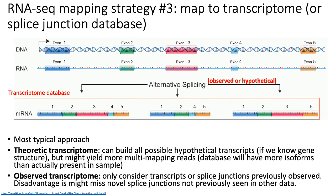Whether you use a theoretic or observed transcriptome database, if you are using short read sequencing — where reads are much shorter than transcript length — it's practically impossible to quantify isoform-level expression, because there can be many isoforms that a given read maps to. Multi-mapping prevents assigning expression to whole isoforms. So in practice, people often map to databases of splice junctions, where theoretic or observed pairs or triplets of exons that get spliced together are used.